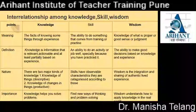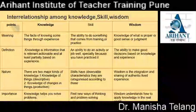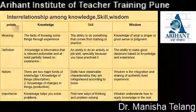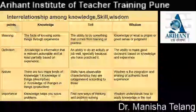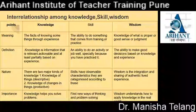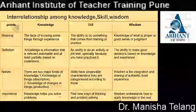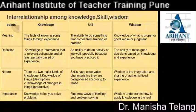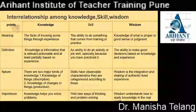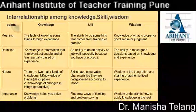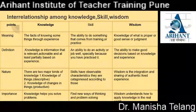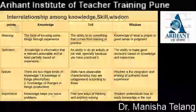Definition of knowledge: knowledge is information that is relevant, actionable and at least partially based on experience. Definition of skill: an ability to do an activity or job well, especially because you have practiced that discipline. Definition of wisdom: the ability to make good decisions based on knowledge and experience. Nature of knowledge: there are two major kinds — descriptive knowledge (knowledge of things) and productive knowledge (knowledge of changes in things). Nature of skills: skills have observable characteristics and are categorized accordingly. Nature of wisdom: wisdom is the integration and sharing of authentic lived experience.